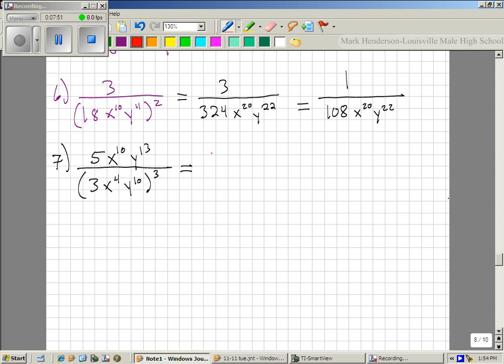So, here's what we're going to do. First of all, the top stays exactly the same. The bottom is what changes. So, that changes to 27, x to the 12, y to the 30. Does the 5 over 27 reduce? No, it doesn't. So, this is x squared on the bottom, because there's two more x's on the bottom than there is on the top. And it's actually y to the 17 on the bottom, because there's 17 more y's on the bottom than there are on the top.